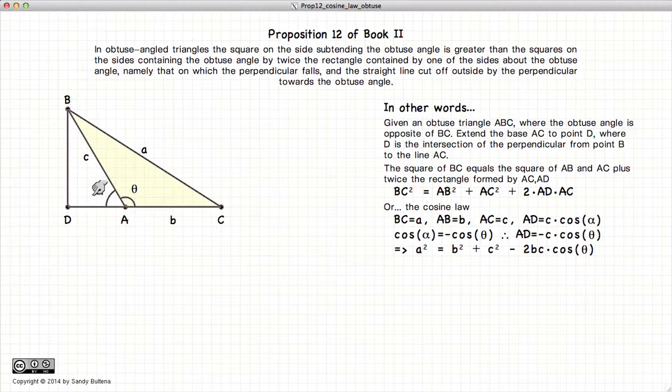Now DA is equal to cos of alpha. Theta is 180 degrees minus alpha. Cos of 180 minus an angle is minus cos of the original angle. All that is saying is that cos of alpha is equal to the minus cos of theta.